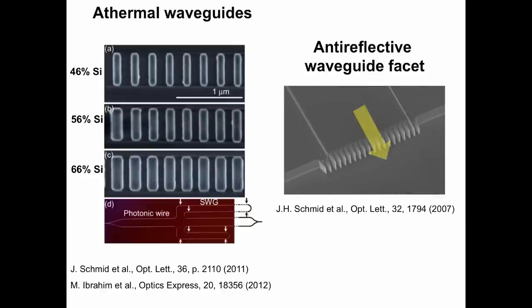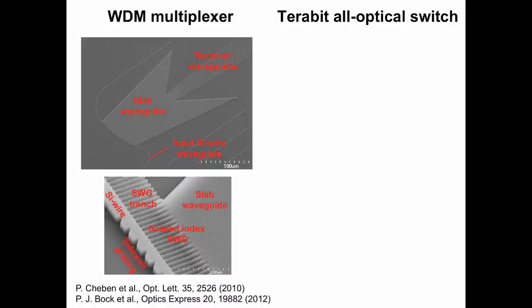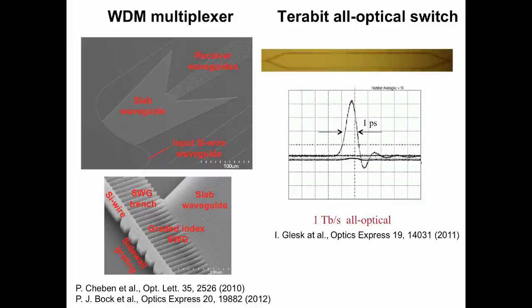Here we can see a subwavelength anti-reflective waveguide facet, which is formed directly at the chip edge, similar to the anti-reflective moth eye structure. A new type of ultra-compact WDM multiplexer with the size of only 100 by 160 micrometers. And an ultra-fast optical switch with a speed of 1 TB per second, which we developed in collaboration with Professor Ivan Glesk at University of Strathclyde.